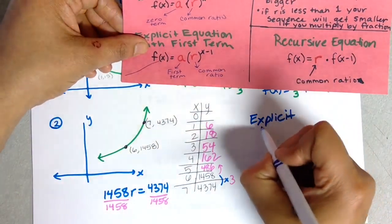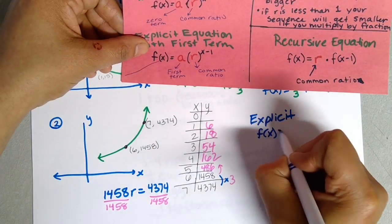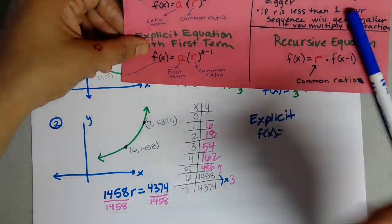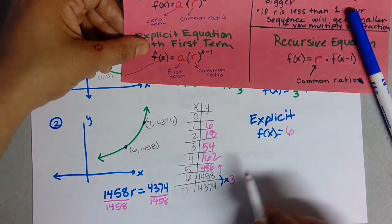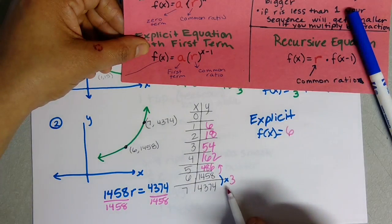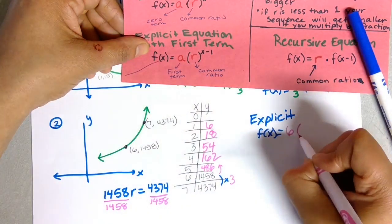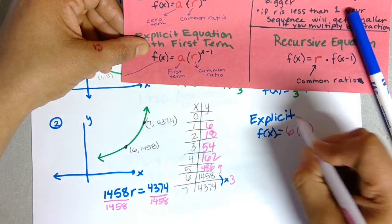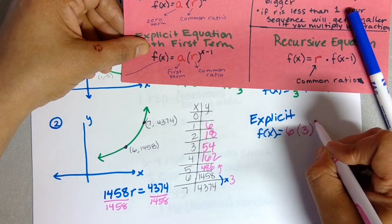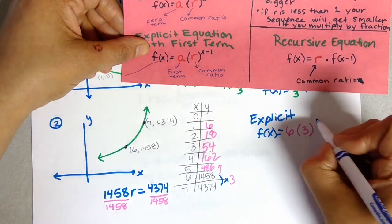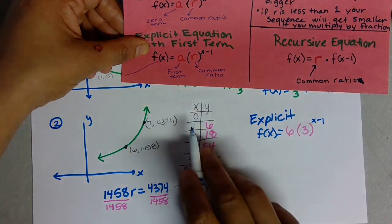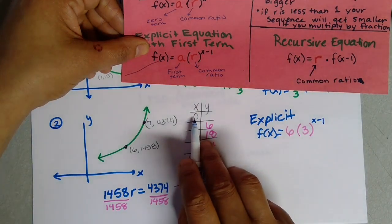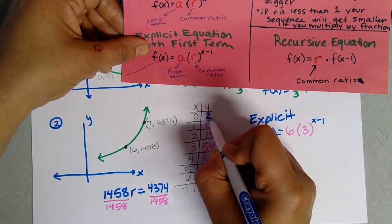Explicit equation is f(x) equals my first term, which is 6, my common ratio is 3, raised to the x minus 1, because I use the first term. If you use the zero term, this would have been 2 and it would have been to the x.